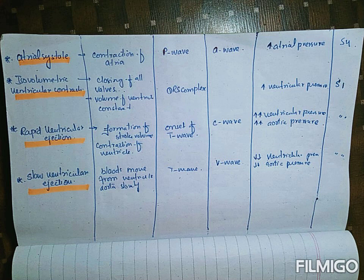The third phase is rapid ventricular ejection. All the blood that has accumulated in the ventricle is now pumped out, forming the stroke volume — the amount of blood pumped by the ventricle in one beat. During rapid ventricular ejection, the QRS complex denotes depolarization and contraction of the ventricle, and the onset of the T wave begins in this phase.